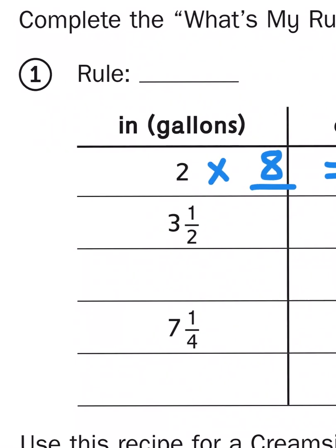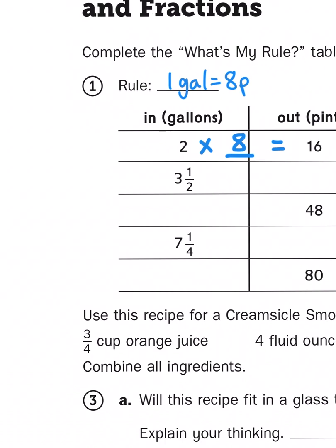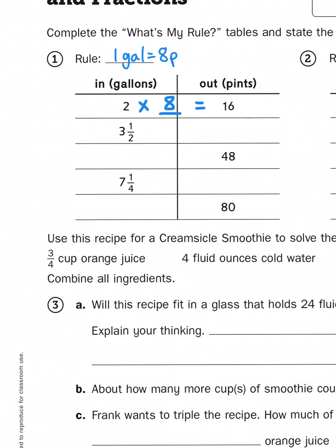2 times 8 is 16, so that must be my conversion rate. So, if I have 2 gallons, that's equivalent to 16 pints. So, what's the rule? Well, that would be 1 gallon equals 8 pints. So, the rule is multiply times 8. So, whatever I have in my column on the left, I'm going to multiply by 8.